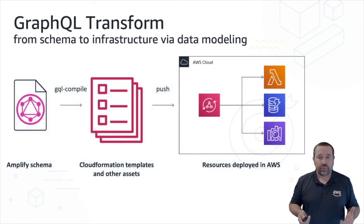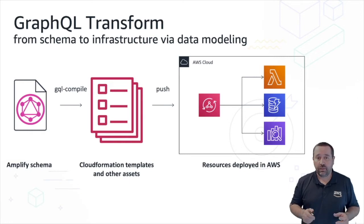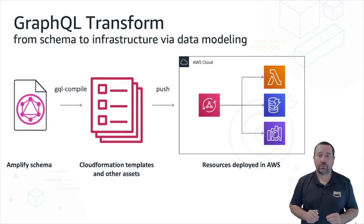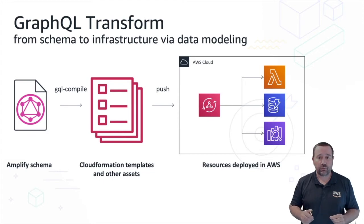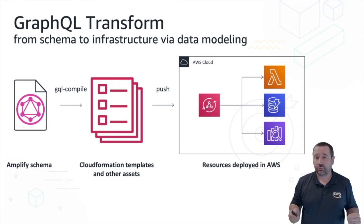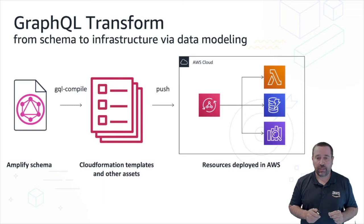The GraphQL Transform Library provides a simple abstraction so that you can quickly create backends for your web and mobile applications. Amplify includes a set of custom GraphQL directives that you can use to add features to your applications, things like authentication and data storage. With the GraphQL Transform Library, you create a data model using the GraphQL schema definition language. This GraphQL schema is translated by Amplify into a set of fully descriptive CloudFormation templates that you can use to deploy your backend resources in the cloud.